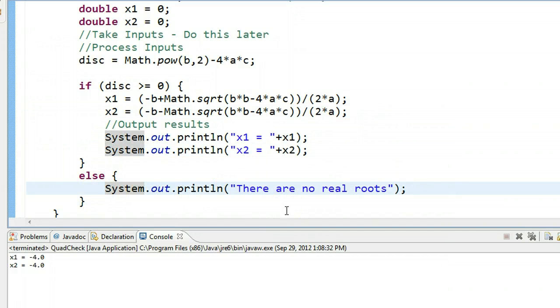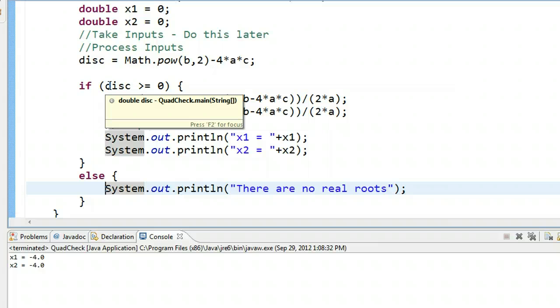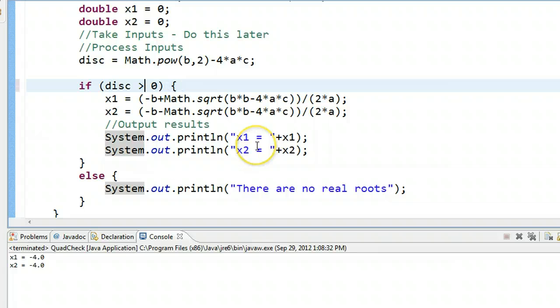Else, there are no real roots. So if we want to change this, we know that if the discriminant is 0, we only have one real root. So what I can do here is I'm going to take this if statement, and I'm only going to say if it's greater than 0.